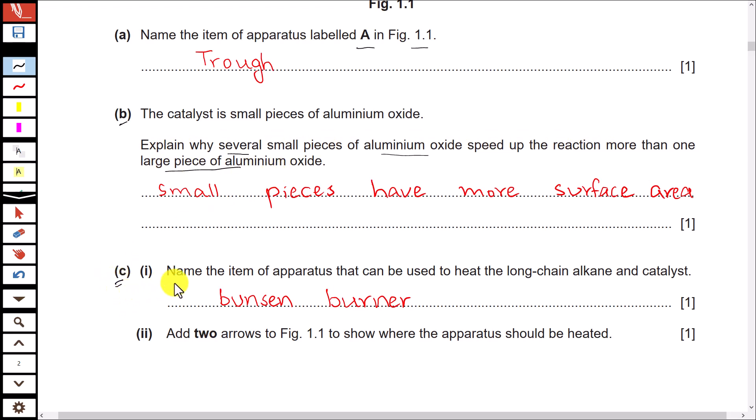Part C. Name the item of apparatus that can be used to heat the long chain alkane and catalyst. The apparatus used for this purpose in laboratory is Bunsen burner.